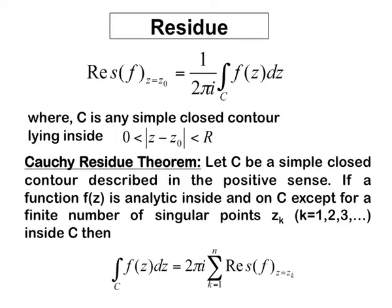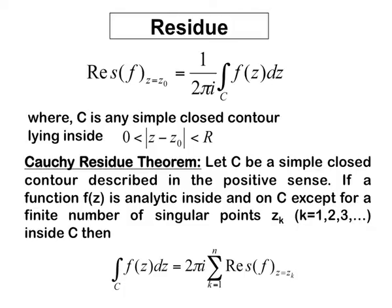This important theorem relates residue with an integral. Suppose c is a simple closed contour described in the positive sense — remember that positive orientation means we describe the contour such that the domain lies to the left. If f(z) is analytic inside and on c except for a finite number of singular points z_1, z_2, z_3, etc., then the integral of f(z) dz equals 2πi times the sum of residues at all these singular points. So we calculate the residue at each of the singular points z_1, z_2, z_3 and then sum all residues multiplied by 2πi to obtain the value of the contour integral of f(z) dz along c.